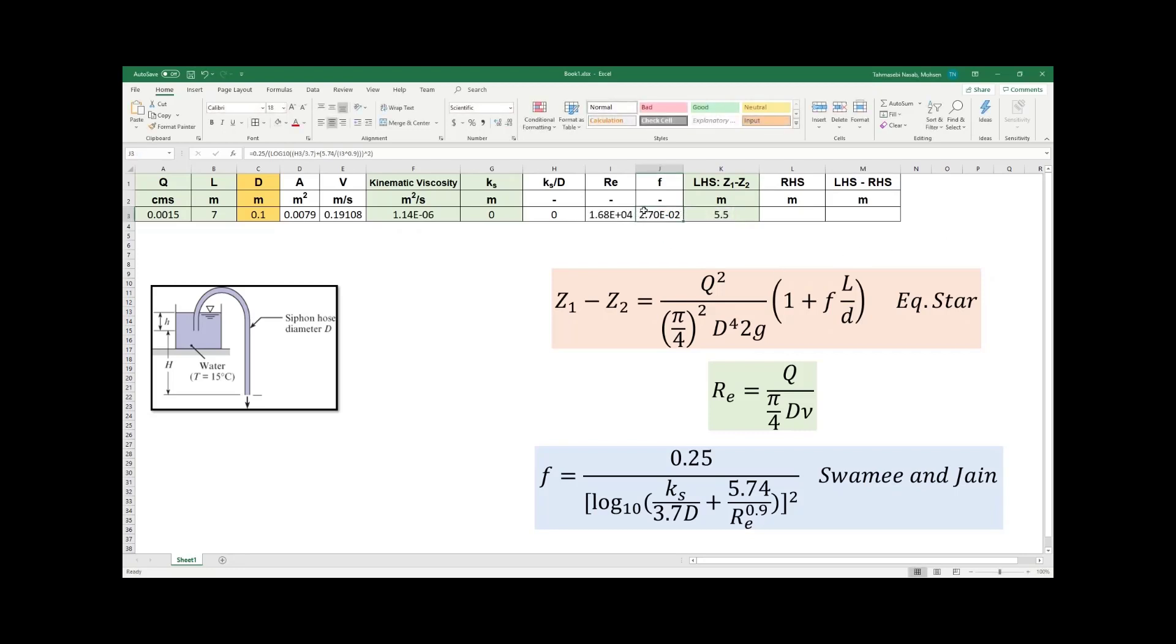As you can see, I wrote down the equation for F, Swamy and Jain, and calculated F to be 2.7 times 10 to the power negative 2.